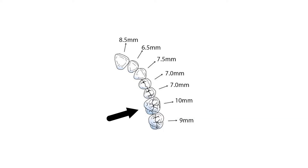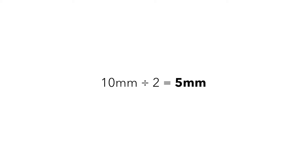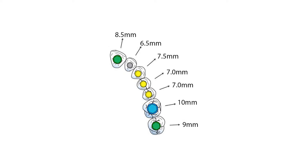Let's look at a molar. Typically, the mesial-distal measurement of a molar is approximately 10 millimeters. Divide 10 by two and one gets 5 millimeters, so the starting point for implant diameter in the molar is 5 millimeters. To make things even simpler, I've made a color-coded diagram that matches the BioHorizons color scheme. At a glance, I can tell my typical starting point for an implant in any position.